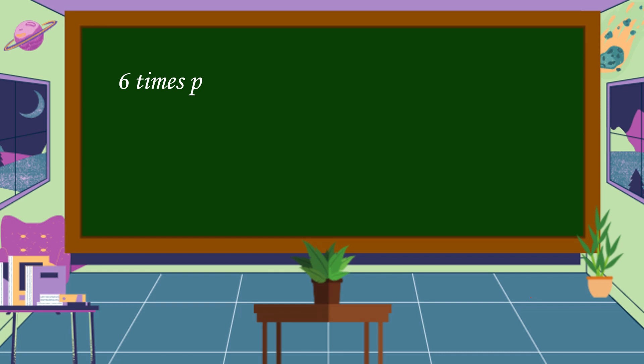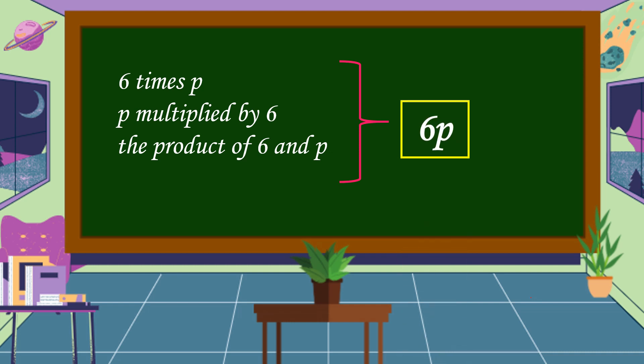6 times P, P multiplied by 6, the product of 6 and P. The algebraic expression of all these phrases is 6P.